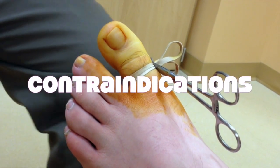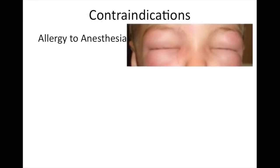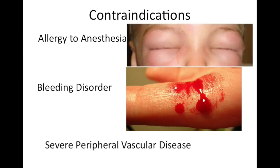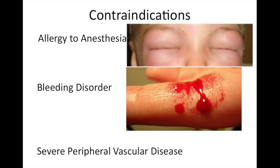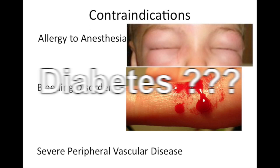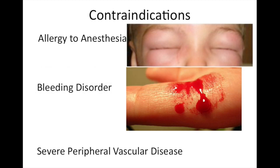When should we not do the procedure? If they're allergic to local anesthesia, if they have a bleeding disorder, or if someone has severe peripheral vascular disease, you might want to reconsider. Some people say there's a relative contraindication in patients with diabetes, but it's better to assess their peripheral vascular status rather than go by diabetes alone — particularly since recurrent paronychia can cause serious complications in diabetic patients.